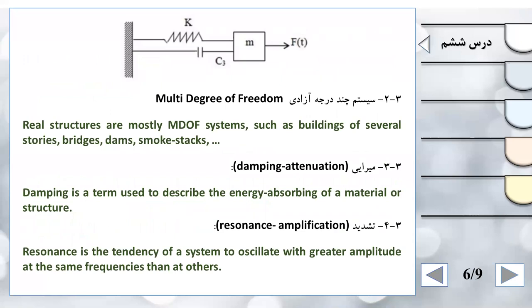سیستم چند درجه آزادی - Multi Degree of Freedom (MDOF): Real structures are mostly multi degree of freedom systems such as buildings of several stories, bridges, dams, smoke stacks. سازه‌های واقعی اغلب سیستم چند درجه آزادی هستند، سازه‌هایی مثل پل، ساختمان‌های چند طبقه، دودکش‌ها و غیره.